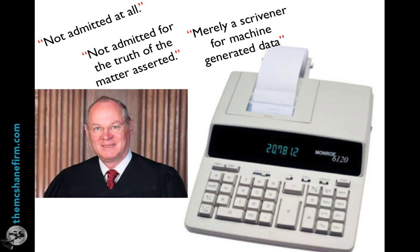The next thing to discuss is the notion that the underlying evidence — the raw data, the underlying facts or information that give rise to the conclusion — was not admitted at all, and therefore somehow that doesn't affront confrontation. Or the notion that it's not admitted for the truth of the matter asserted, and therefore should not affront confrontation or relevance. Or the idea that the witness is merely a scrivener for the machine-generated data — and why each and every one of those is a failing argument for several different reasons.